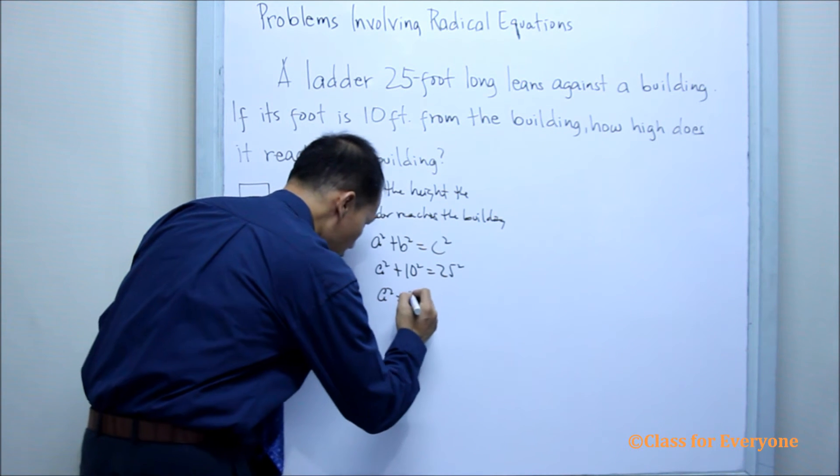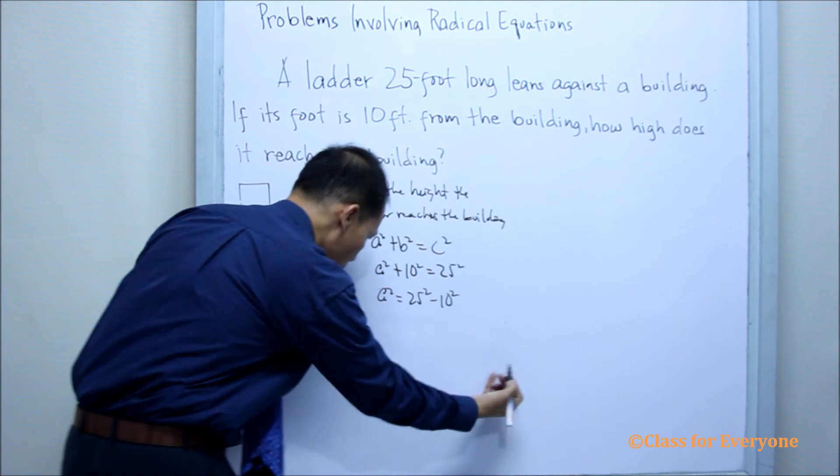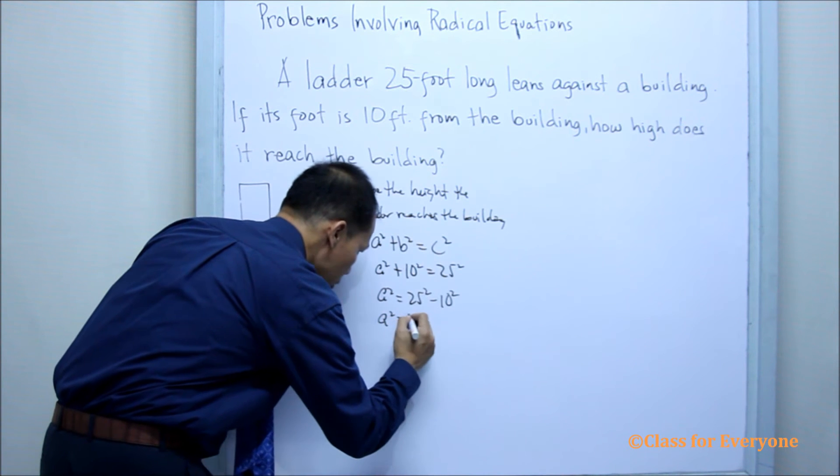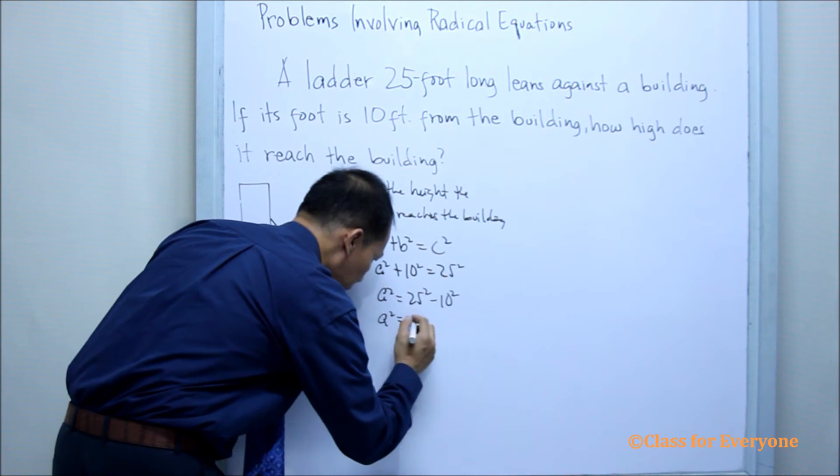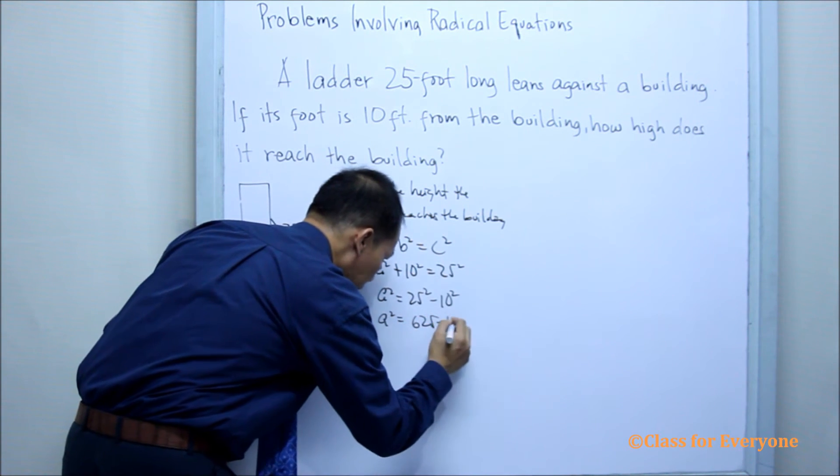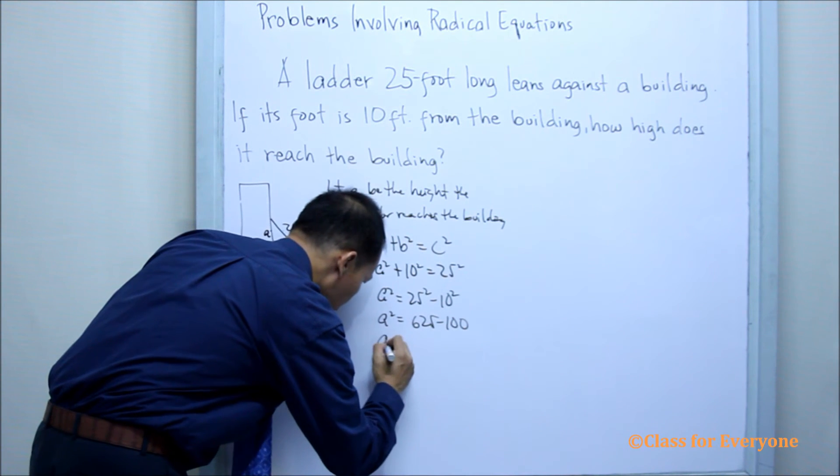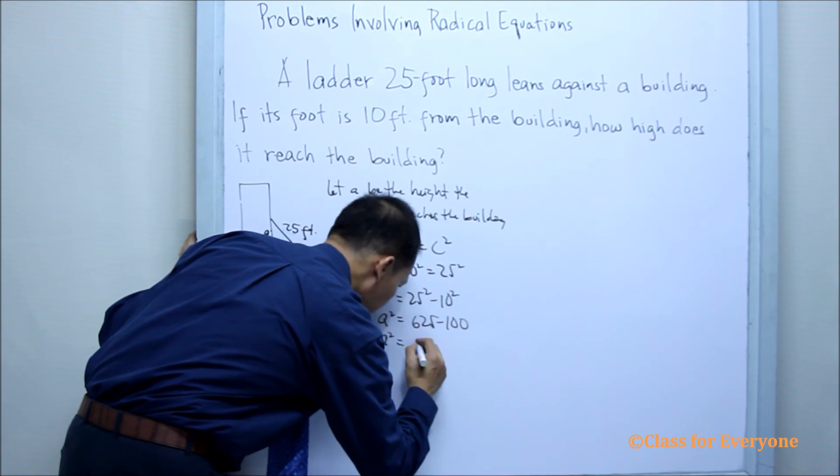Therefore, A squared is equal to 25 squared minus 10 squared, where A squared is equal to 625 minus 100. A squared is equal to 525.